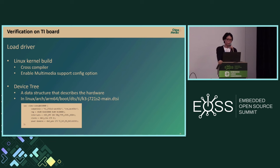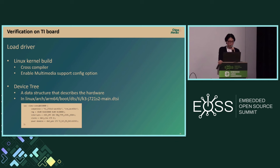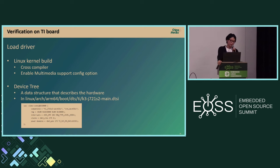Now I'll discuss verification on the TI target board. First, regarding Linux kernel build options: the V4L2-related module is not enabled by default, so you have to enable the multimedia support config option. Regarding the device tree — how the V4L2 driver finds your video device — a device tree is a data structure describing the hardware. When you build the Linux source code, device tree files are generated as DTB files. The bootloader loads the DTB, and the Linux kernel parses it to get hardware device information, then loads the correct driver for the video device.